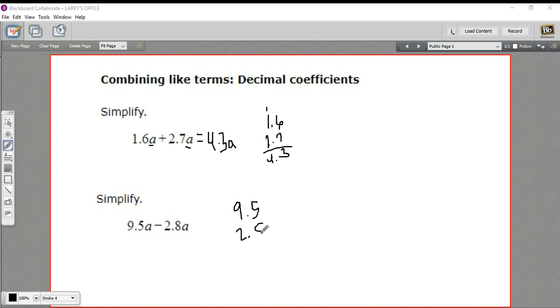So we can just do the subtraction. So 5 minus 8, I'll have to borrow 1. 15 minus 8 is 7, and 8 minus 2 is 6. So this is 6.7a.